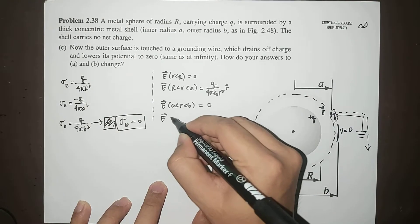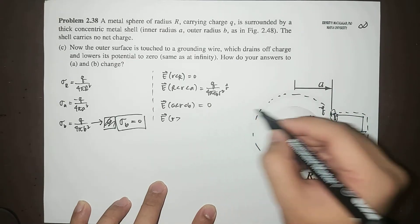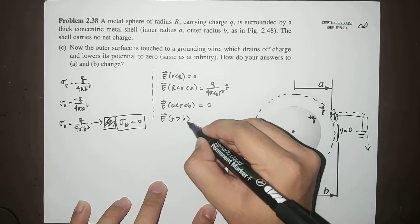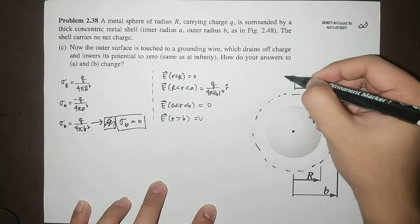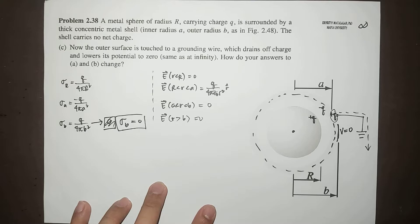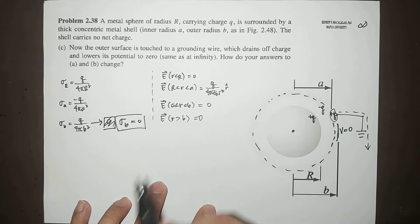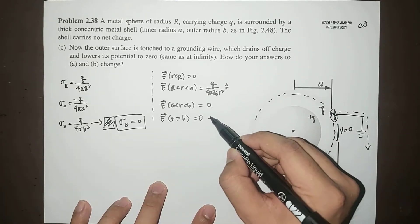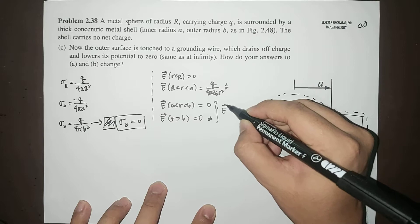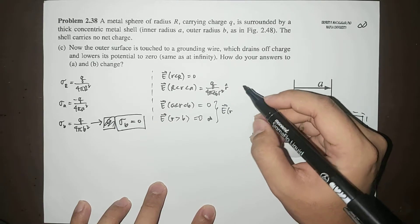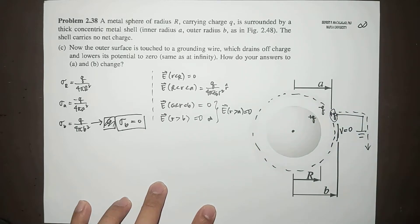as well as if you have points outside the shell, because the enclosed charge even here would still be zero. Okay, so the change that happened in letter B would be this part. So we can now combine this as E where R is greater than A is zero.